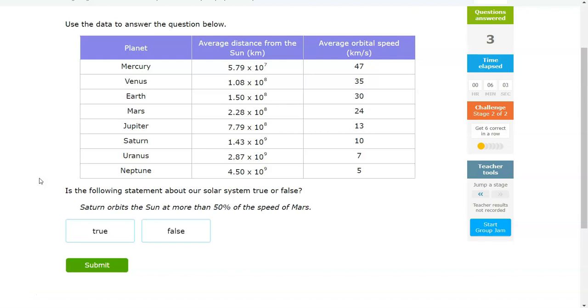So for stage 2, you're looking mainly at the speeds of the objects. So we're going to look at the orbit speed of Saturn and Mars orbit speed. So Mars has an orbital speed of 24 kilometers per second. Saturn has 10. So the question is,